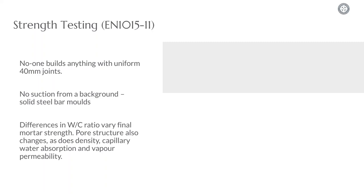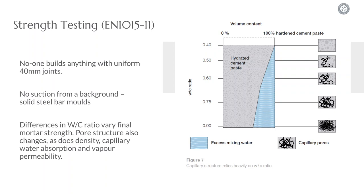Looking at some of the other issues with the strength testing standards: the bars which are being formed are formed at 40mm. Nobody builds anything with a 40mm joint. On top of that, every single background that you'd be applying a render to, or that you'd be building a wall with, will have some degree of suction. That's not the case for solid steel bar moulds, and this is a very important point, because it changes the water-binder ratio of the final hardened mortar — and as a consequence, everything from your strength, to your density, to your pore structure, to your capillary water absorption, your water vapour permeability — pretty much every set hardened measurement of a mortar or render that you would test will be changed in situ compared to a laboratory result made in a steel bar mould.